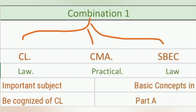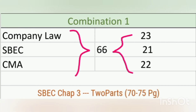I included SBC in the first combination because this paper includes some basic concepts in its path, so I thought we'll learn these concepts first before going into the other subjects. The first combination includes Company Law, CMA, and SBC — totally 66 chapters. In Company Law we have 23 chapters, in SBC we have 21 chapters, and in CMA we have 22 chapters.